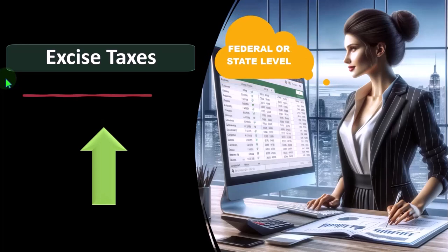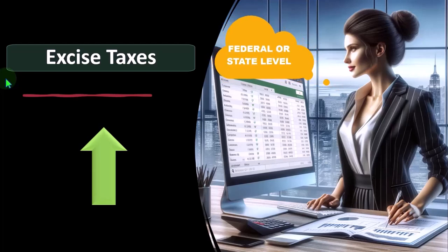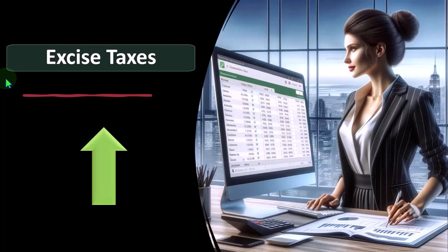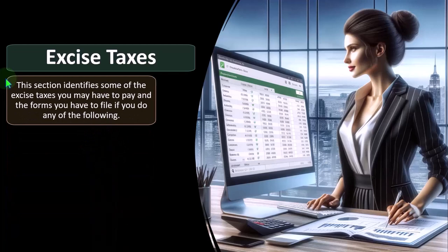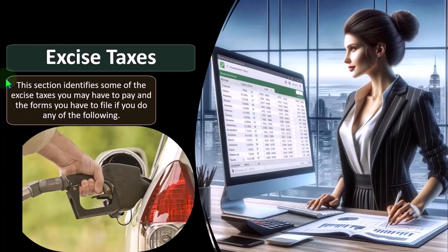Excise taxes are directed more specifically toward particular industries for a particular goal. The most common example is probably taxes on gasoline. The idea is that roads exist between states — interstate commerce — which is why the federal government got involved in building freeways and roads that go through different states.